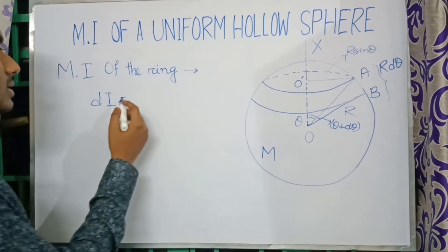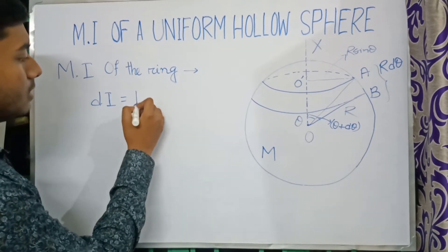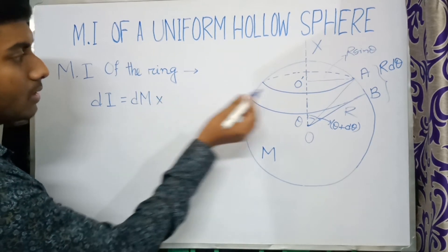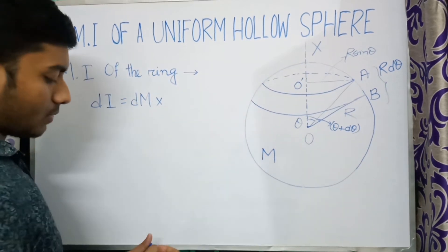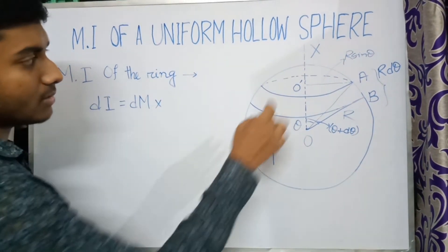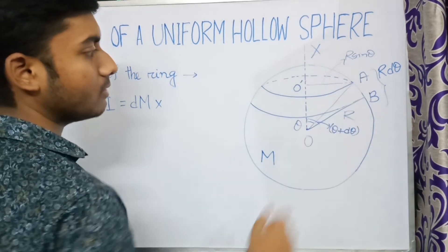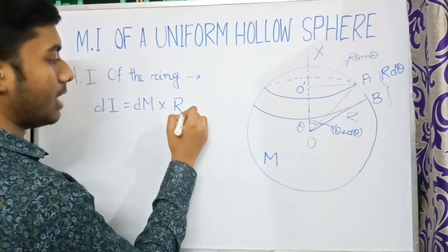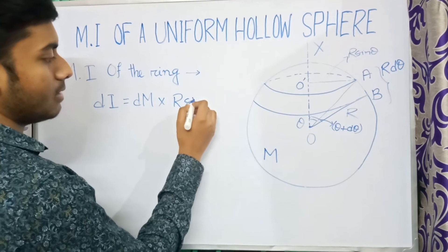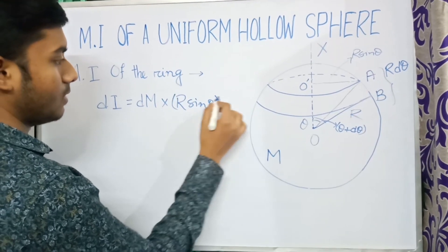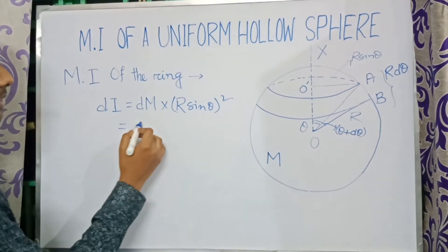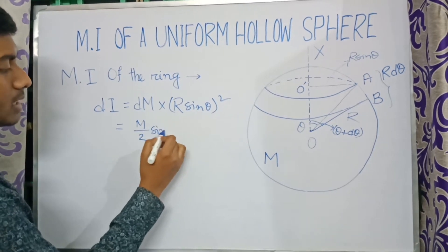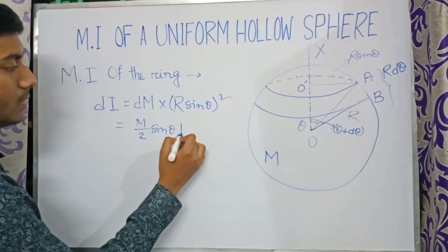The moment of inertia of the elemental ring is dI = dm · (R·sinθ)², and dm equals (M/2)·sinθ·dθ.